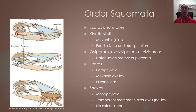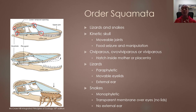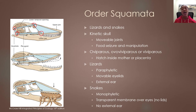All lizards and snakes undergo internal fertilization because the sperm cannot enter the egg to fertilize it once the shell is on. When it comes to birth, they can be either oviparous, ovoviviparous, or viviparous, depending on the species. Ovoviviparous species hatch their young inside the uterus. Some species have placentas rather than a yolk to supply their young with nutrients, which is more common in viviparous species.